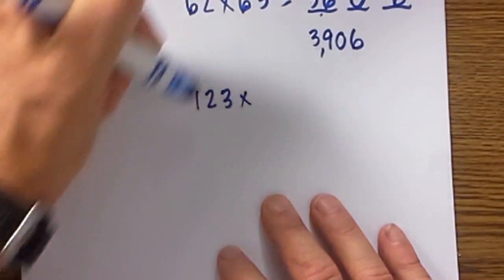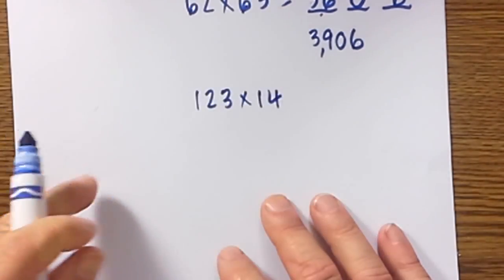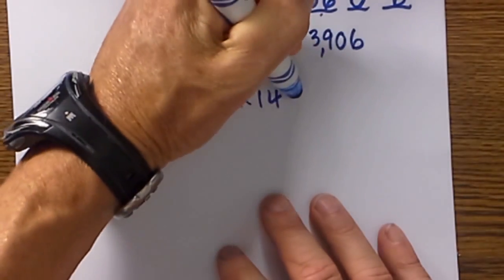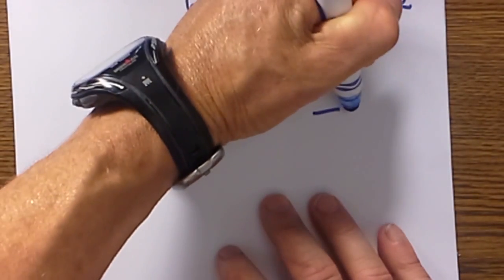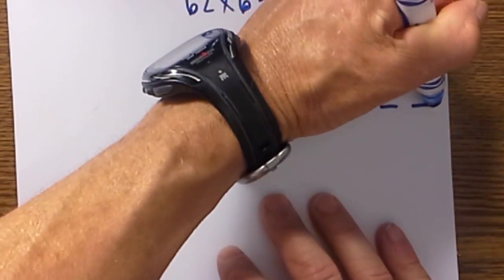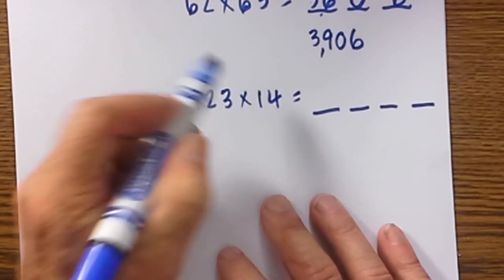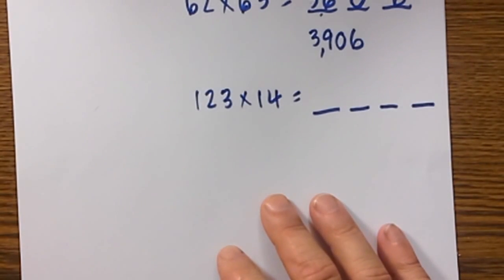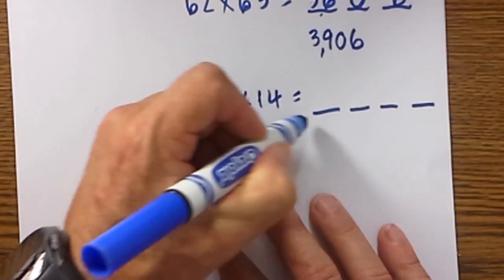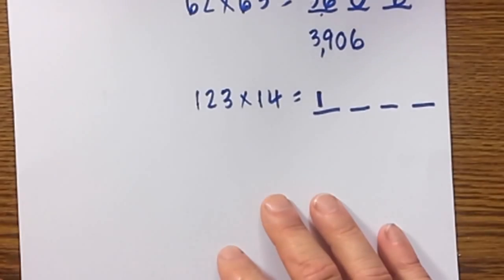Say we have 123 times 14 again what I do since we have 5 digits I will assume it will be a 4 digit number but when you multiply these first two digits it will tell you if it is a 4 or 5 digit answer. So here we go. 1 times 1 for the first number is 1 that is easy.